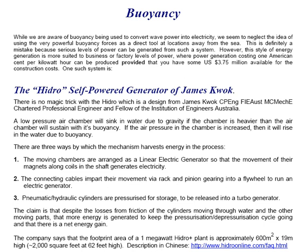There are three ways by which the mechanism harvests energy in the process. One, the moving chambers are arranged as a linear electric generator, so that the movement of their magnets along coils in the shaft generates electricity. Two, the connecting cables impart their movement via rack and pinion gearing into a flywheel to run an electric generator. And three, pneumatic hydraulic cylinders are pressurized for storage to be released into a turbo generator.